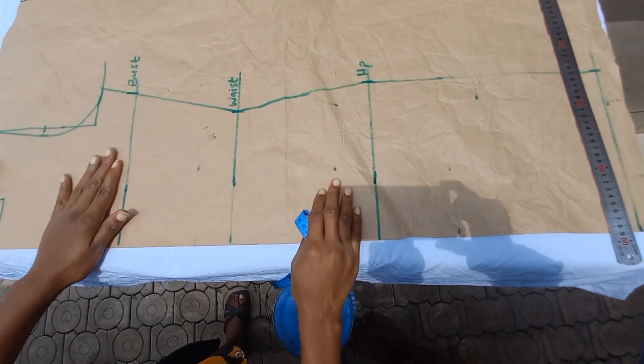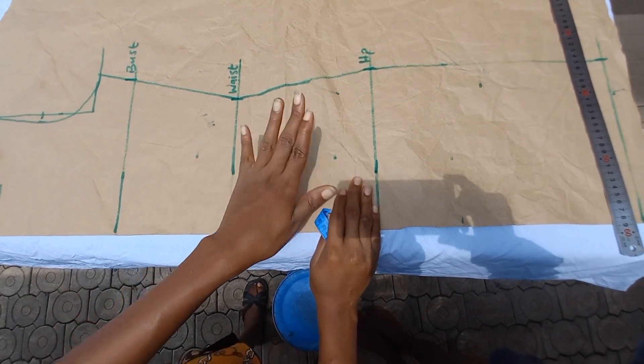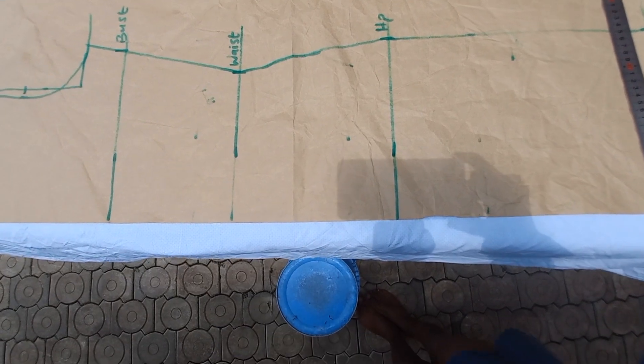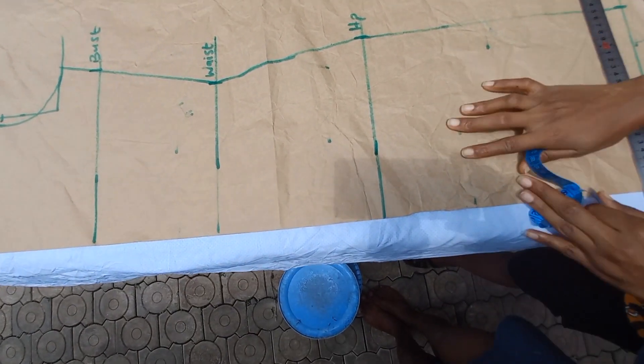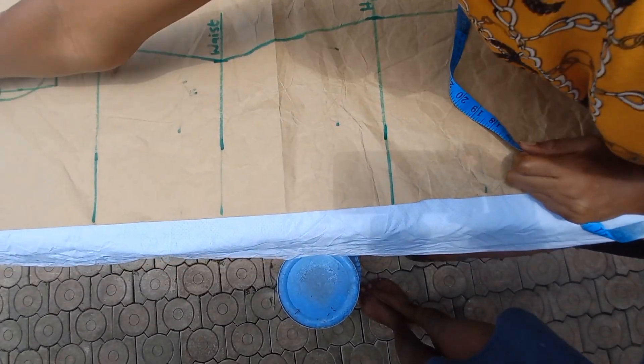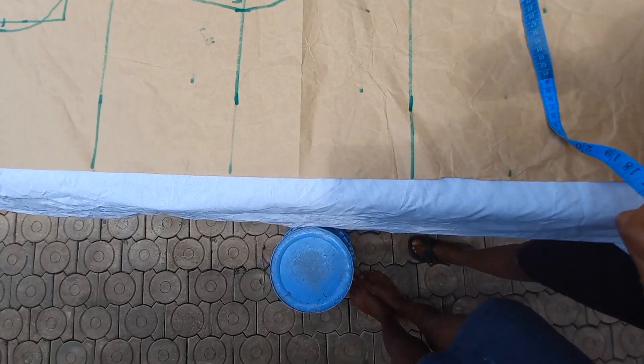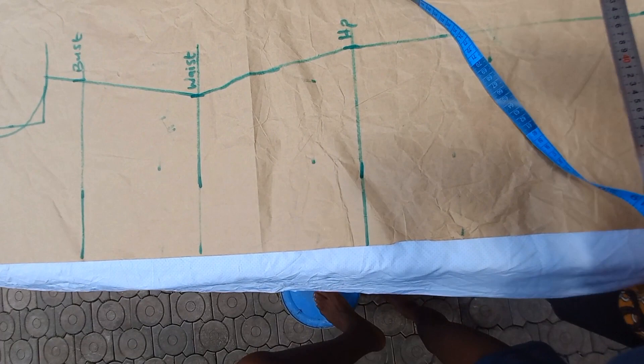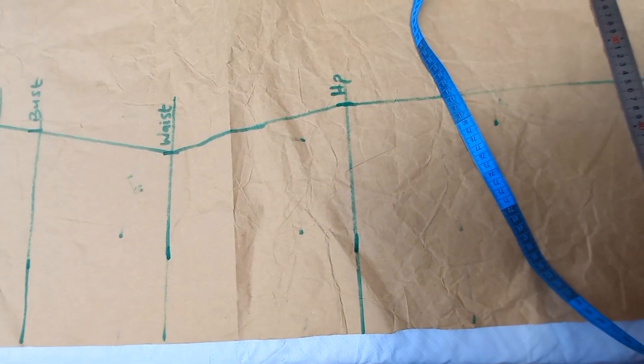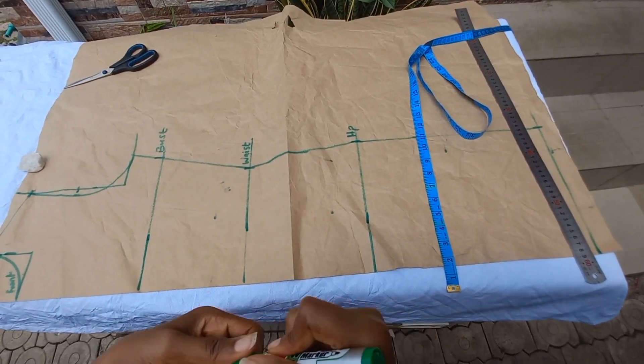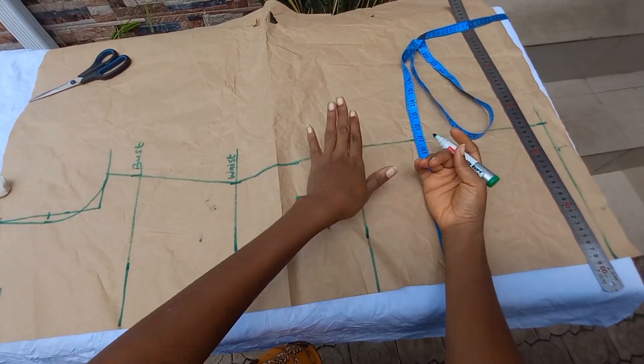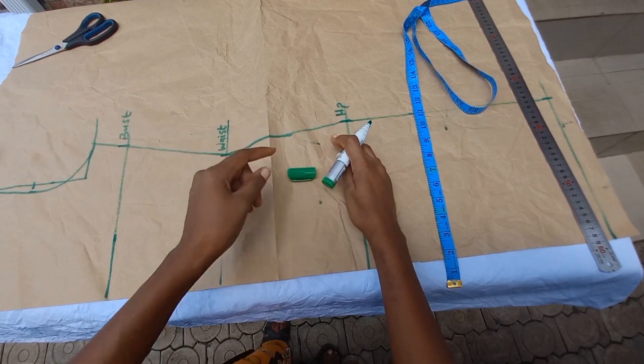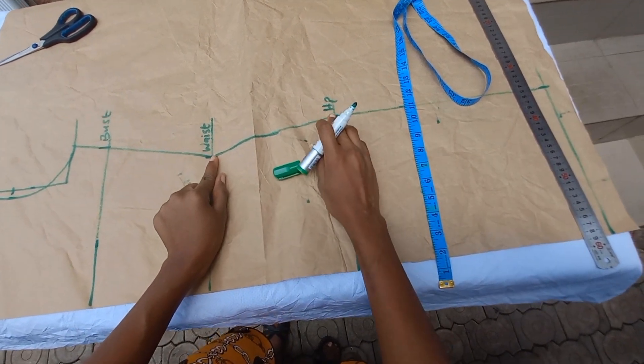After drafting your block for the slash and spread method, all you have to do is indicate what point you want the Russian or the gathering at the side to begin from. For me, it can be in between the waist and the hip. When you indicate that point, you can now decide to mark out how many inches you want to spread your paper apart. If I'm picking in between my waist and hip line—the distance between my waist and hip is eight inches, so the midpoint will be four inches—I can decide to go in my slashes by two inches from the side into the body.